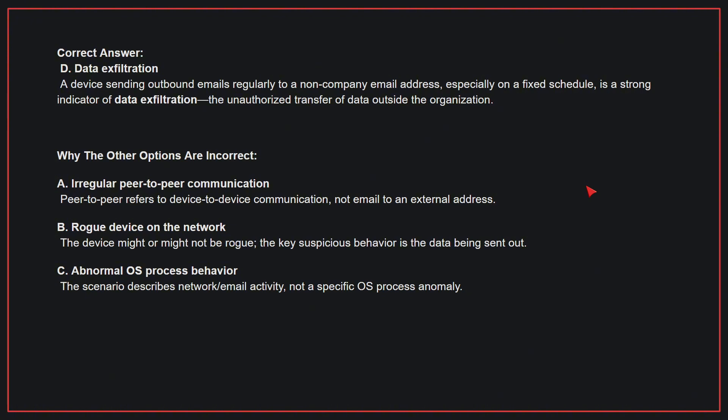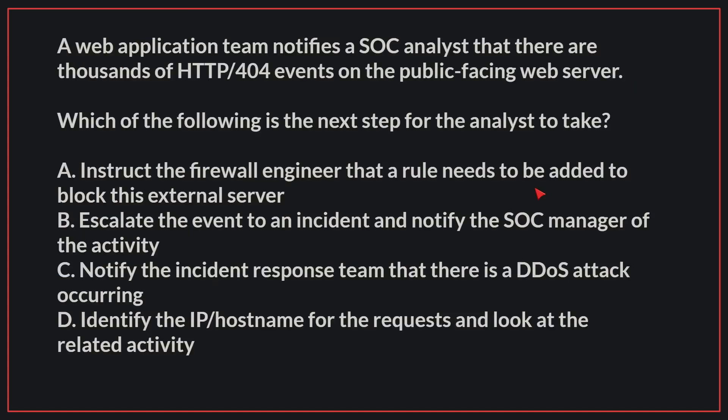Why the other options are incorrect: A — irregular peer-to-peer communication. Peer-to-peer refers to device-to-device communication, not email to an external address. B — rogue device on the network. The device might or might not be rogue; the key suspicious behavior is the data being sent out. C — abnormal OS process behavior. The scenario describes network email activity, not a specific OS process anomaly. Therefore, the correct answer is D.